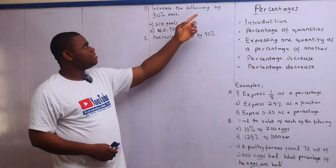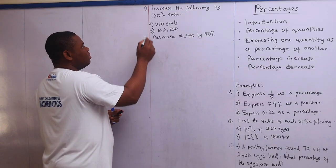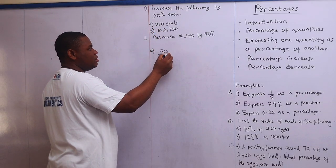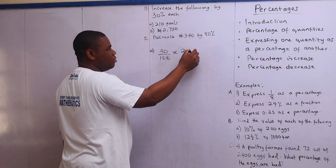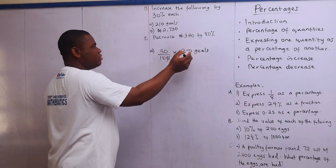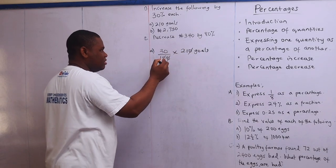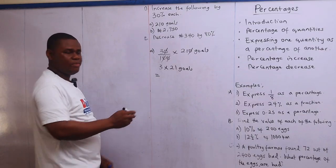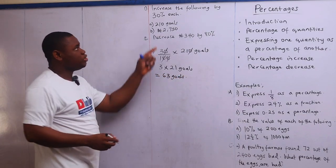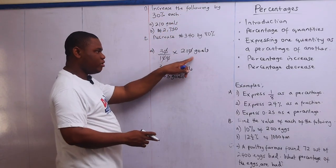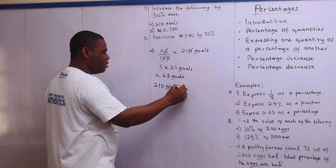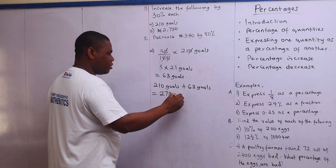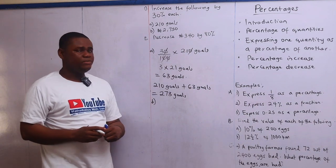For percentage increase and decrease, the first one says increase 210 goals by 30 percent. First I'll find 30 percent of 210 goals: 30 over 100 times 210 — zeros cancel, leaving 3 times 21 goals, which gives 63 goals. Since the question says increase, I add this to the initial number: 210 goals plus 63 goals gives 273 goals.